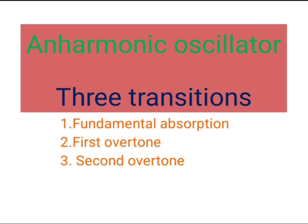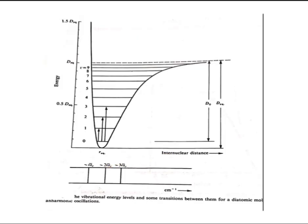In the anharmonic oscillator there are three kinds of transitions we observe: first is fundamental absorption, second is first overtone, and third is second overtone. The diagram shows energy on the y-axis and internuclear distance on the x-axis, representing vibrational energy levels and transitions for a diatomic molecule obeying the rules of an anharmonic oscillator.